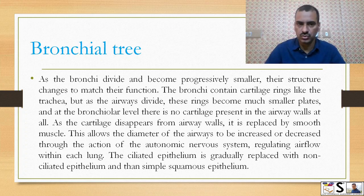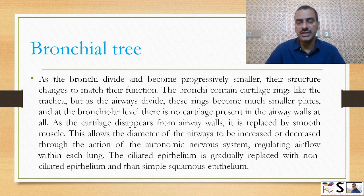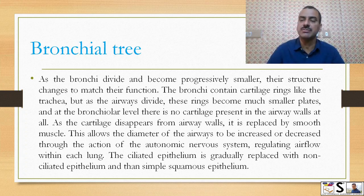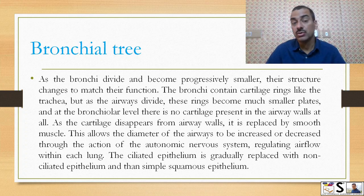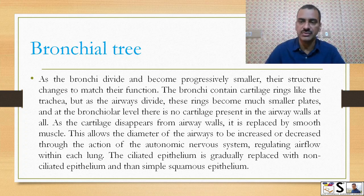The bronchi contain cartilage rings like the trachea, but as the airway divides, these rings become very small, and at the bronchiole level there is no cartilage present in the airway walls.